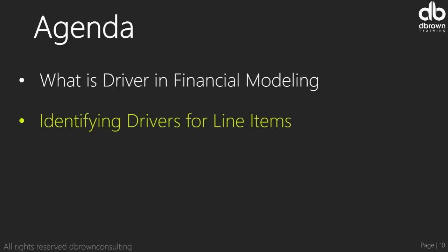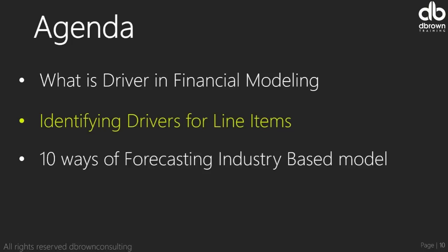For example, take trade receivables. If there are no sales on credit, that implies you cannot have trade receivables. It is because you sell something on credit that you have trade receivables, and as such you can set your sales as a driver for your trade receivables. There are some macroeconomic factors you may need to factor in as well, but only when you have sufficient information about the firm — such as their cost breakdown, expenses, price, and quantity.